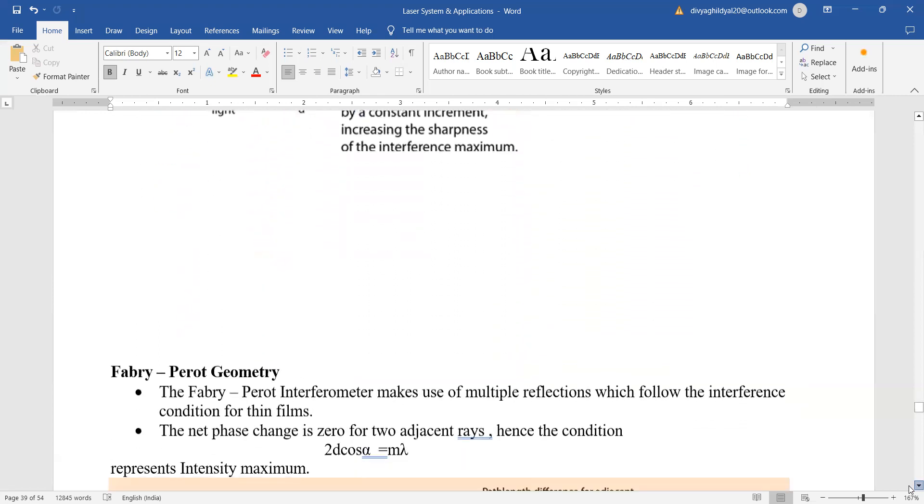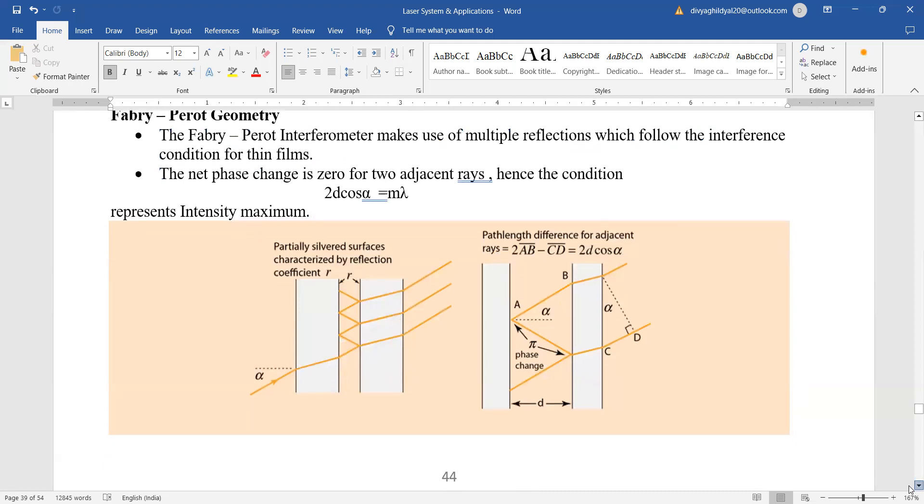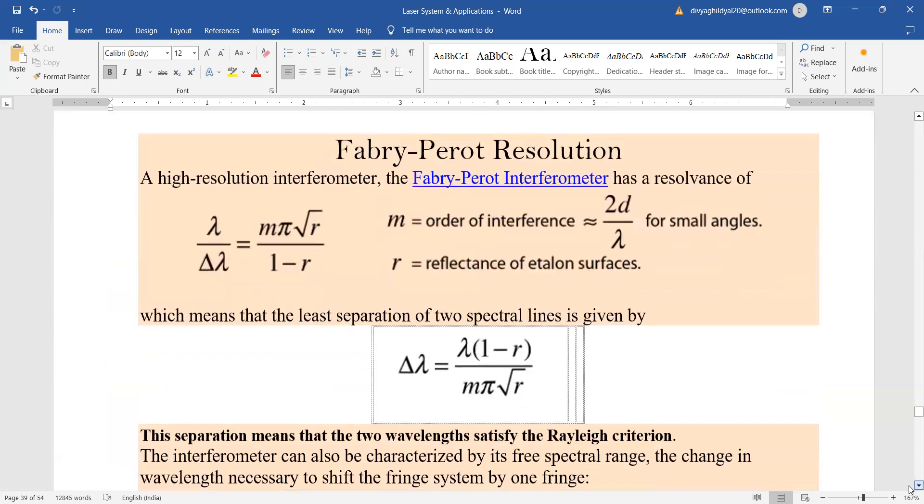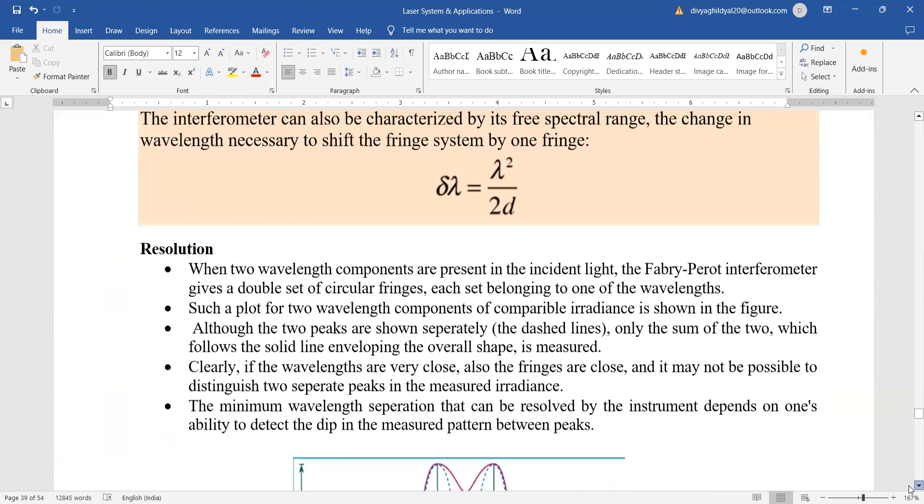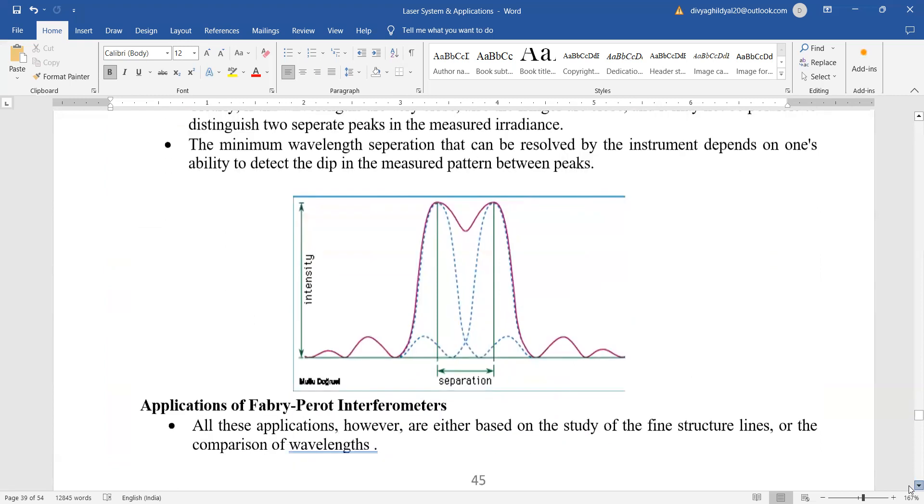And the Fabry-Perot geometry is such that it is satisfying the condition of interference, so that we get a good output and nice resolution of the laser beam, where we satisfy the condition of resolution criteria.